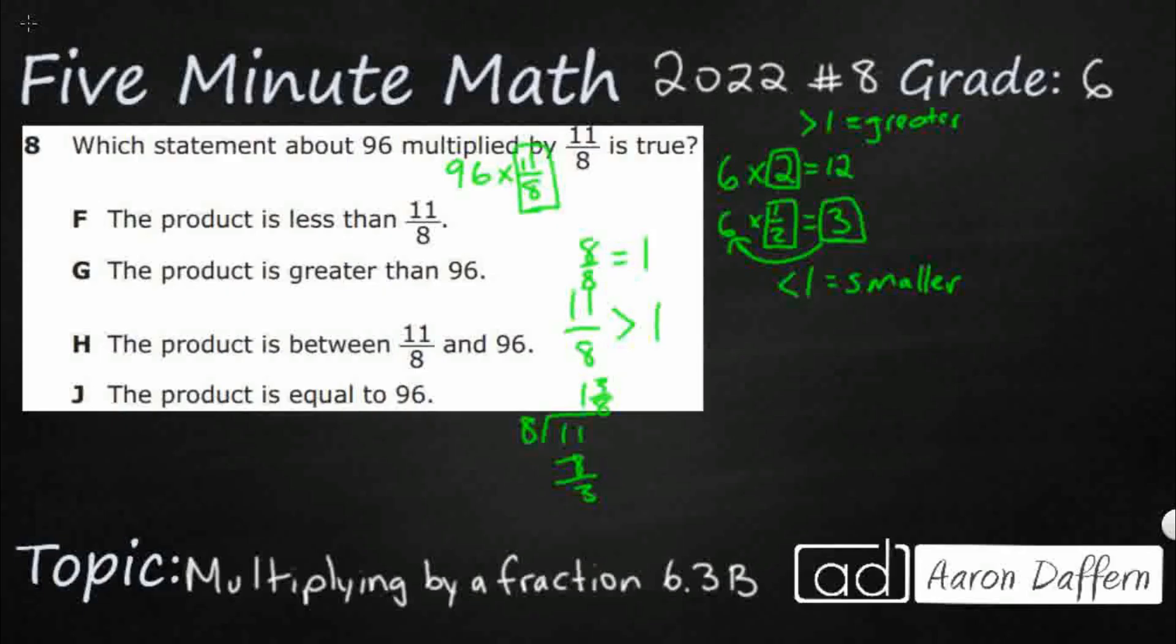If I'm multiplying by something greater than 1, 11-eighths is greater than 1, then it stands to reason that my product is going to be greater than my first factor.